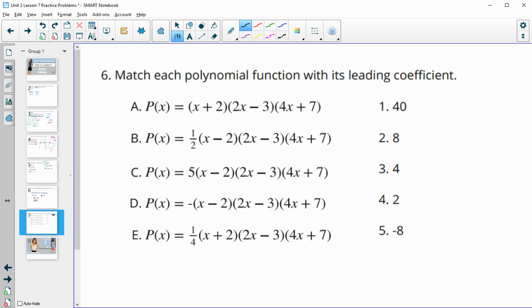Number 6 says, match each polynomial function with its leading coefficient. Remember, we find the leading coefficient by multiplying all of these first and highest degree terms. So we're going to do x times 2x times 4x. That's going to be 8, and we'd have the x cubed. So the lead coefficient is just that front number, the 8. So this is going to be number 2.